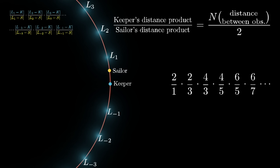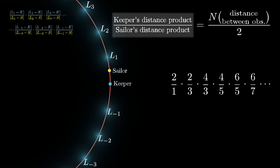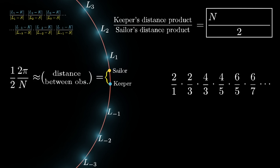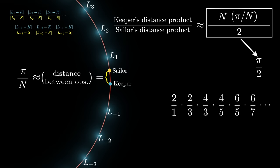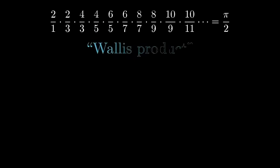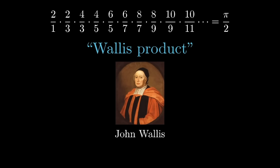Combining this over all of the lighthouses, we get the product 2/1 × 2/3 × 4/3 × 4/5 × 6/5 × 6/7, on and on and on — exactly the product we're interested in studying. Each term reflects the contribution of a particular lighthouse as n approaches infinity. And since the ratio of keeper's to sailor's distance product equals n times the distance between observers divided by 2, and the distance between the observers is half of 1/n of a full turn around a unit circle of circumference 2π, this distance approaches π/n. Therefore n times this distance divided by 2 approaches π/2. So our product 2/1 × 2/3 × 4/3 × 4/5, on and on, must approach π/2. This is a truly marvelous result known as the Wallis product, named after 17th-century mathematician John Wallis, who first discovered it in a far more convoluted way. He also invented the infinity symbol.